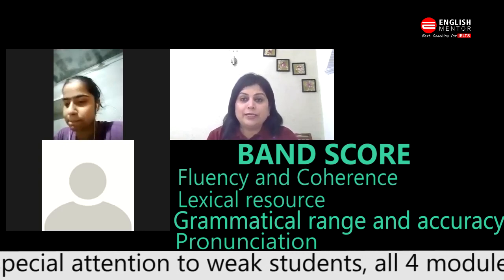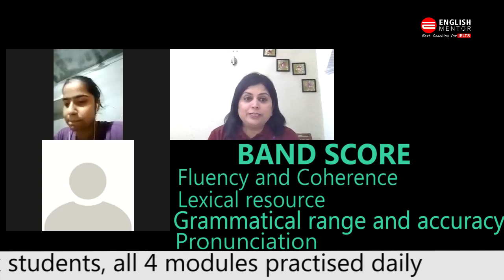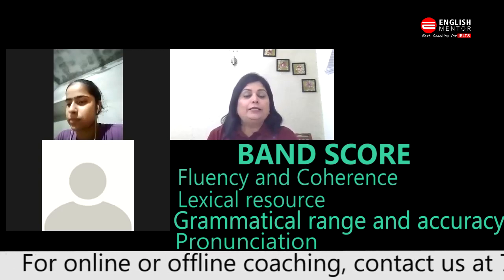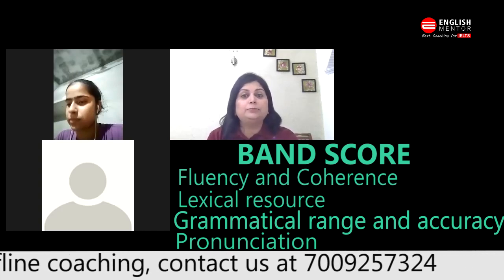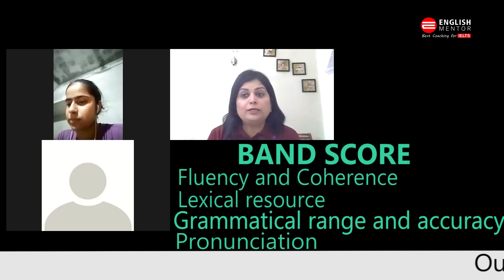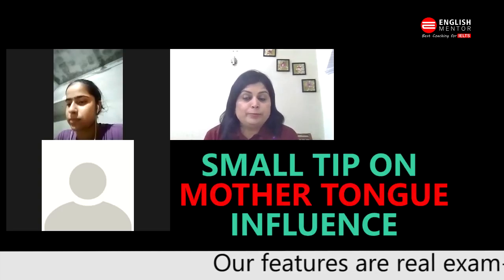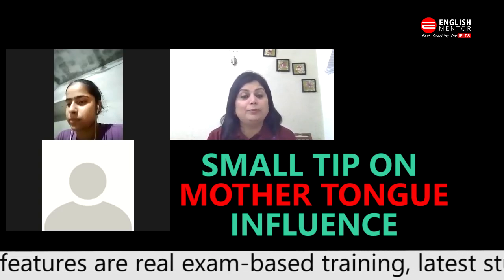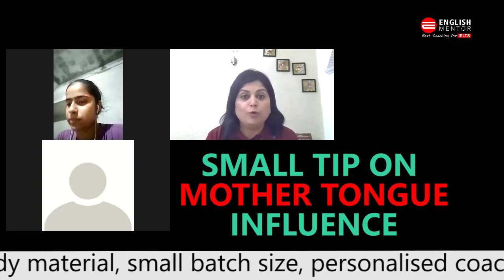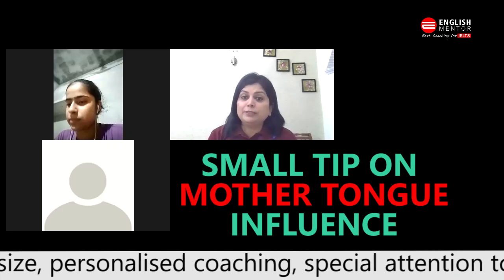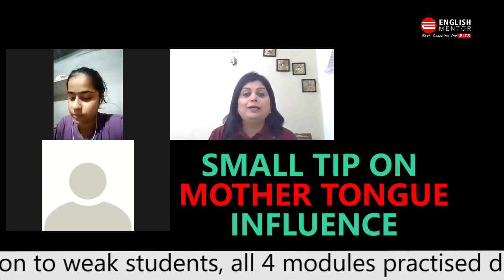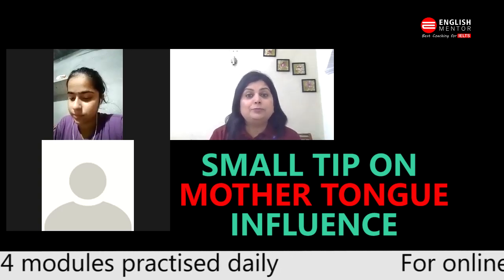In speaking they check how good you are at fluency, lexical resource — which we also call vocabulary — grammatical range and accuracy, meaning what kind of sentences you are using. The fourth criterion is pronunciation: they check how you pronounce words. No one here is a native speaker, so it's fine if you have mother tongue influence, but it should not be excessive. For example, if a person is Punjabi or Gujarati, it can be heard in their English.